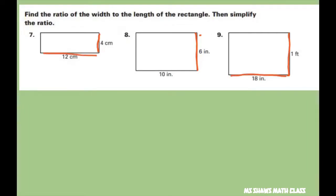So all you have to do is write it out. So that's four centimeters to twelve centimeters. These cancel out and we're going to simplify by dividing the numerator and the denominator by four and that gives you one to three. So that's seven.